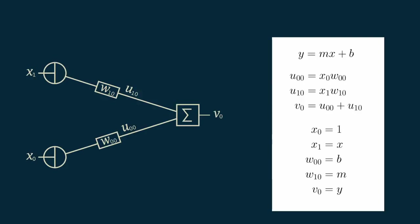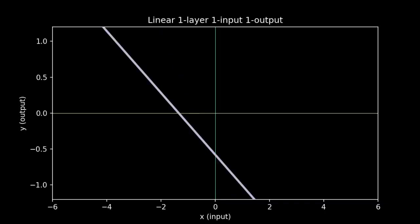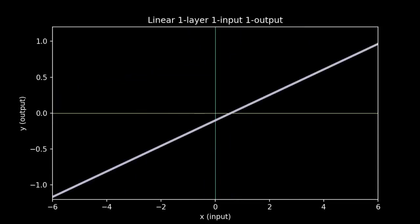We can get a sense of the type of models that this network is capable of learning by choosing random values for the weights, w sub 0,0 and w sub 1,0, and then seeing what relationship pops out between x sub 1 and v sub 0. Remember that we set x sub 0 equal to 1 and are holding it there always. This is a special node called a bias node.